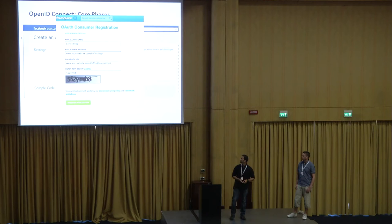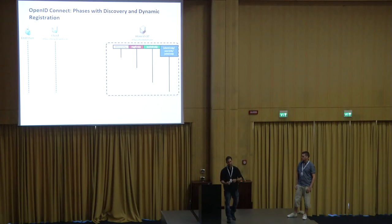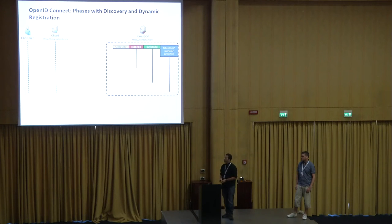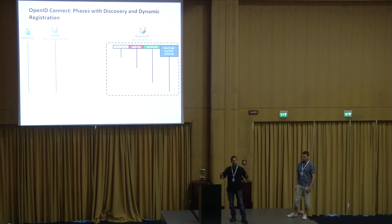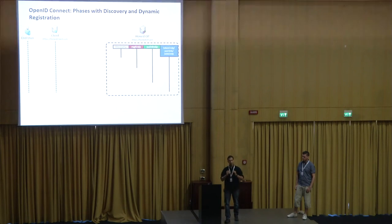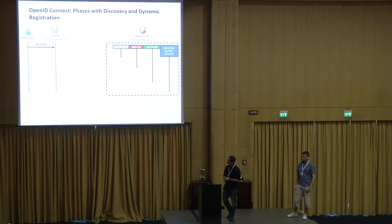But imagine your URL where your client is deployed changes a little bit. You have to do the registration manually again and again, and it could be annoying. Another problem is if I want to use a different OpenID provider — not Google, but my own. How can this be done? The guys specifying OpenID Connect found a very good dynamic solution, which works behind the scenes dynamically without any user interaction, and I will present this feature.